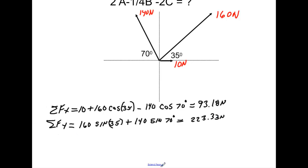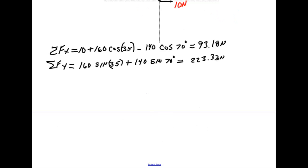At this point, I'll scroll down and give myself a little space. Right now, you immediately go to Pythagorean Theorem, and we know the magnitude of the resultant vector is going to equal to the square root of 93.18 squared plus 223.33 squared. We take the square root of that. That will give us a value of 241.99 newtons. That's the magnitude of our resultant vector.